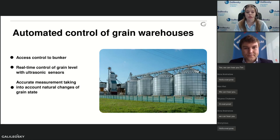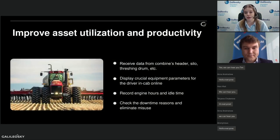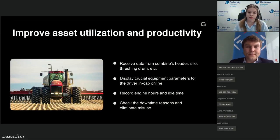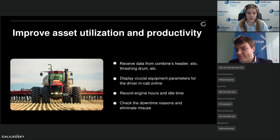Therefore, agriculture companies turned to telematics to develop a system which allows controlling access to grain elevators and bunkers, controlling grain level with ultrasonic sensors in real time, and measuring volume while taking into account natural changes of grain state. The developed solution was approved by the Russian Grain Union and is now deployed by the majority of agriculture companies across Russia.